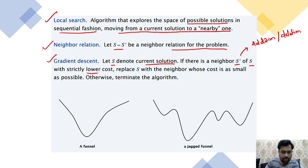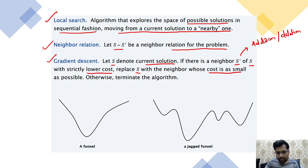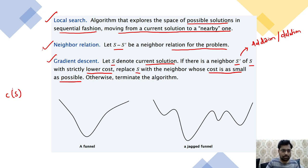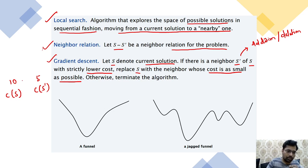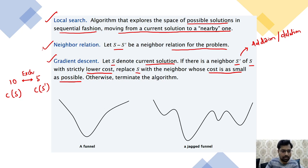S-dash is obtained with strictly lower cost. If you are getting a strictly lower cost, what you have to do is replace s with the neighbor whose cost is as small as possible. For example, if the current solution cost is 10 and the neighborhood solution cost is 5, you replace or exchange with that neighbor solution.